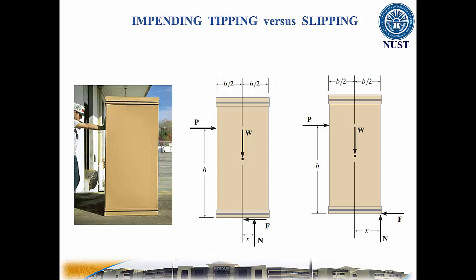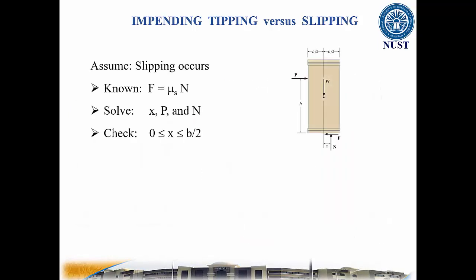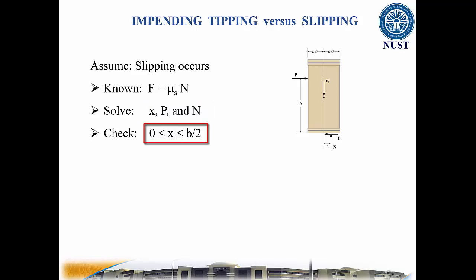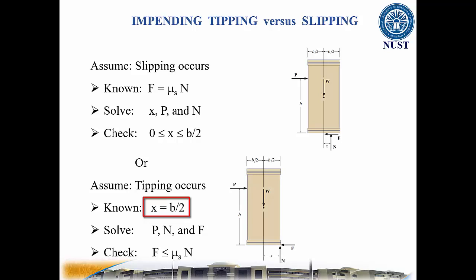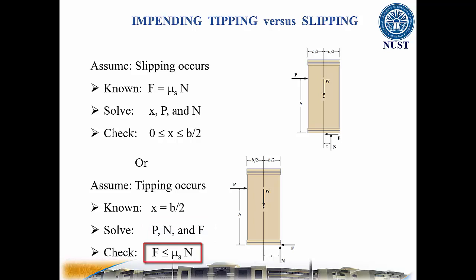Finally, we need to check if our assumption was correct. If we assume that slipping occurs, then the additional equation will be F equal to mu times N, and we will solve for X, P, and N. To validate, use this equation — if it is satisfied, our answer is correct. Or, if we assume that tipping occurs, then X will be known, and we solve for P, N, and F. If the result satisfies the corresponding equation, then our answer is correct.